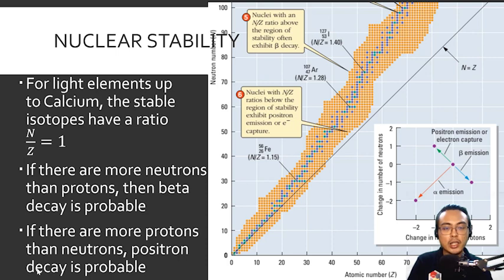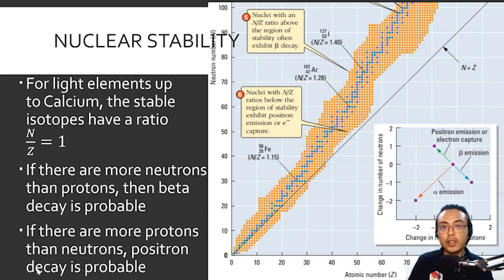For elements heavier than calcium but lighter than bismuth — the intermediate range — there is no single rule. A useful guideline is that if the number of neutrons and protons are both even numbers, the isotope is probably stable. However, we cannot say this with 100% certainty due to exceptions. The only way to be completely sure is to perform rigorous research.